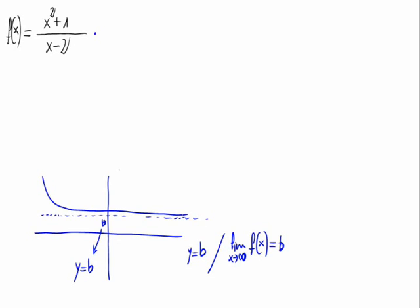Let's calculate the limit when x approaches infinite. If we obtain a real number, that's the horizontal asymptote. It is the limit of x squared plus 1 divided by x minus 2 when x approaches infinite.